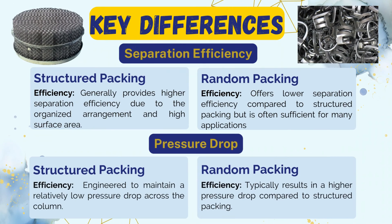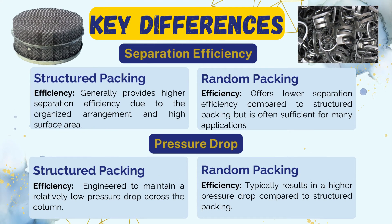The third key difference is separation efficiency. Structured packing generally provides higher separation efficiency due to its organized arrangement and high surface area. Random packing offers lower separation efficiency compared to structured packing, but is often sufficient for many applications. The fourth key difference is pressure drop: structured packing is engineered to maintain a relatively low pressure drop across the column, while random packing typically results in a higher pressure drop.